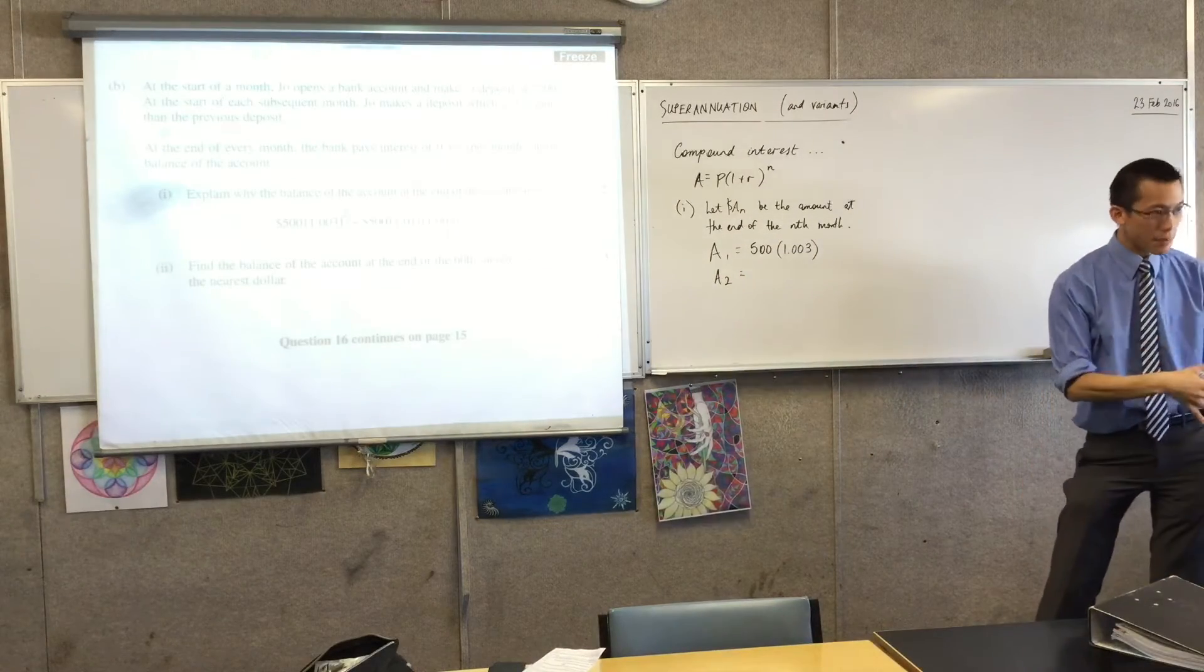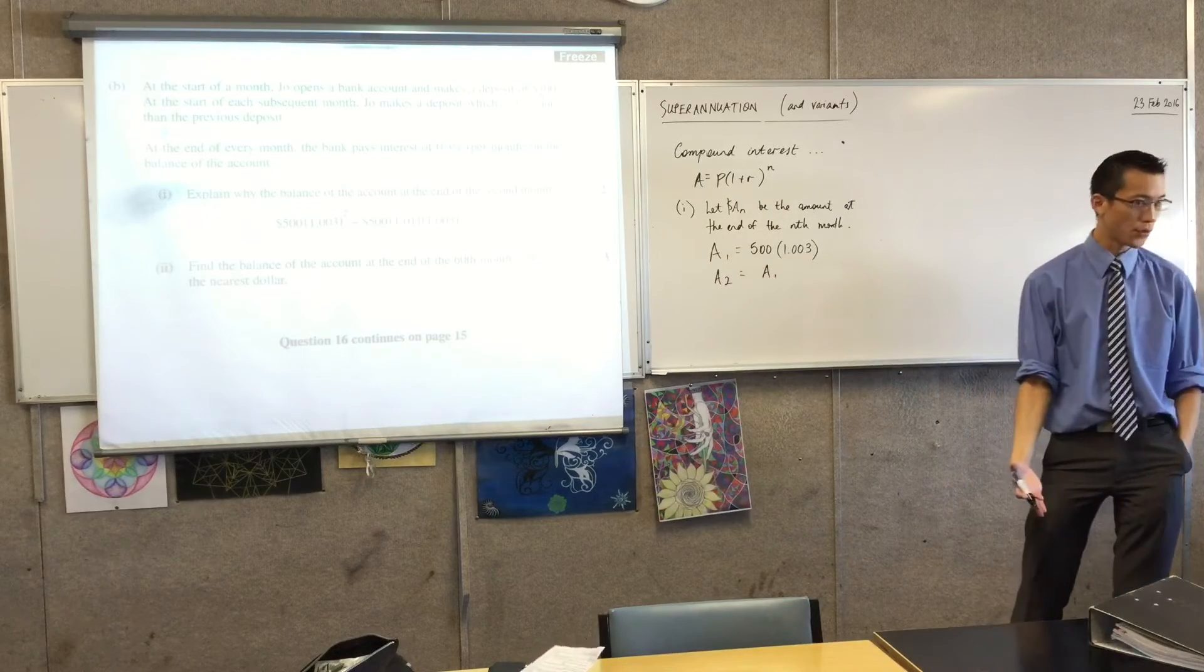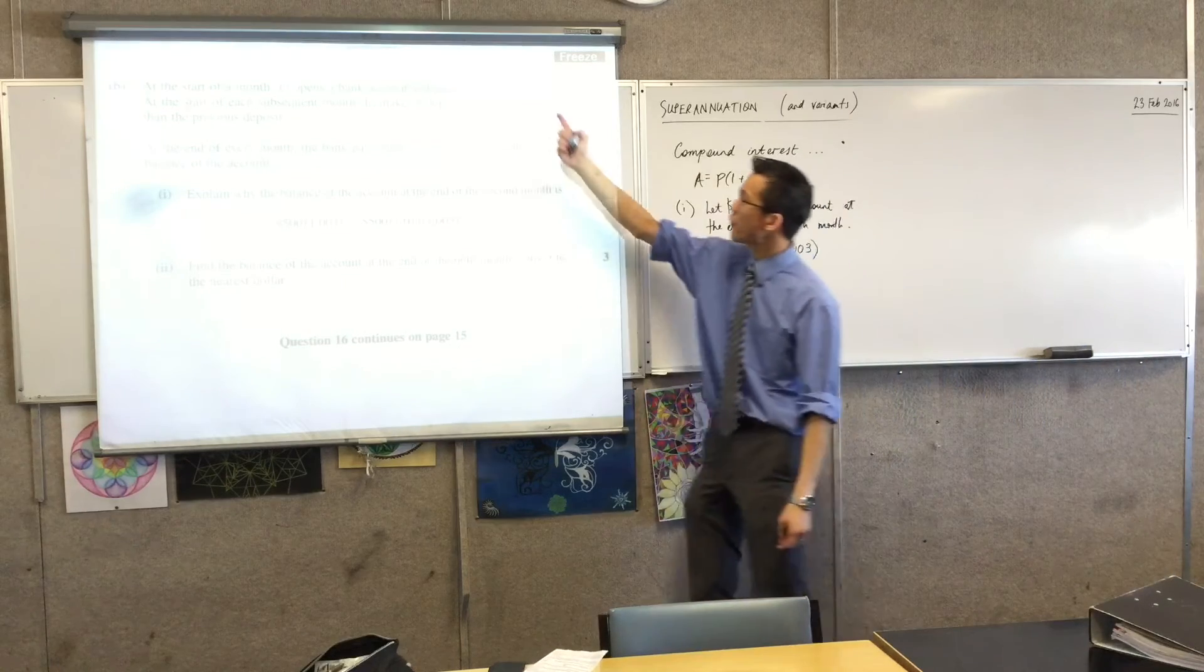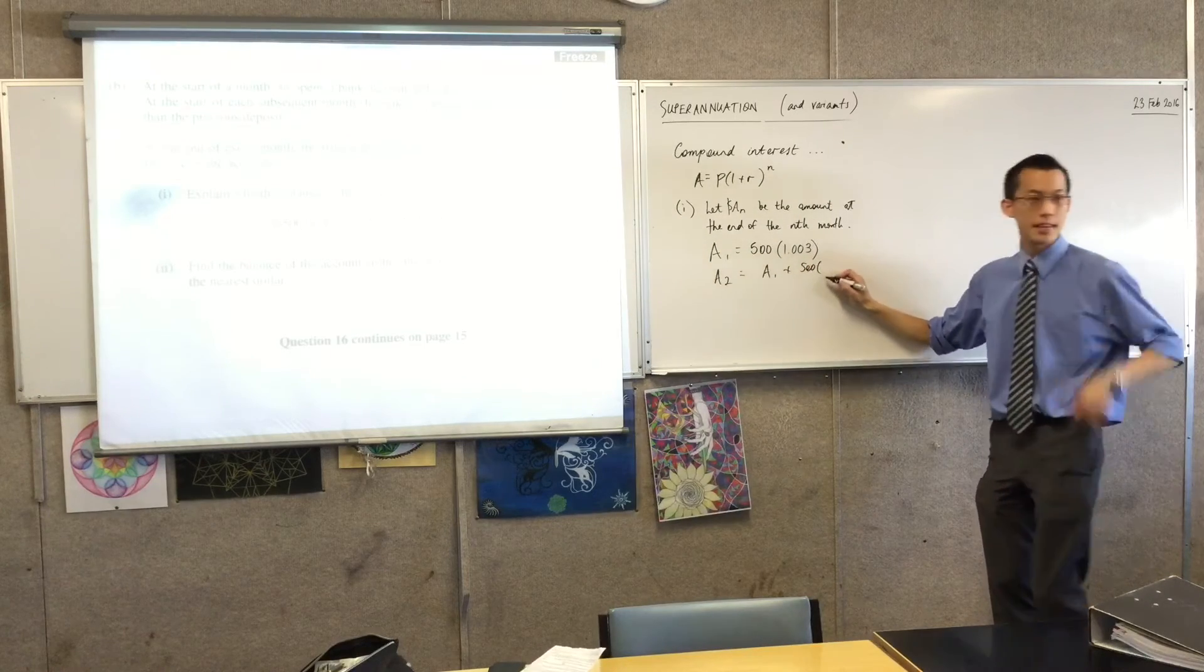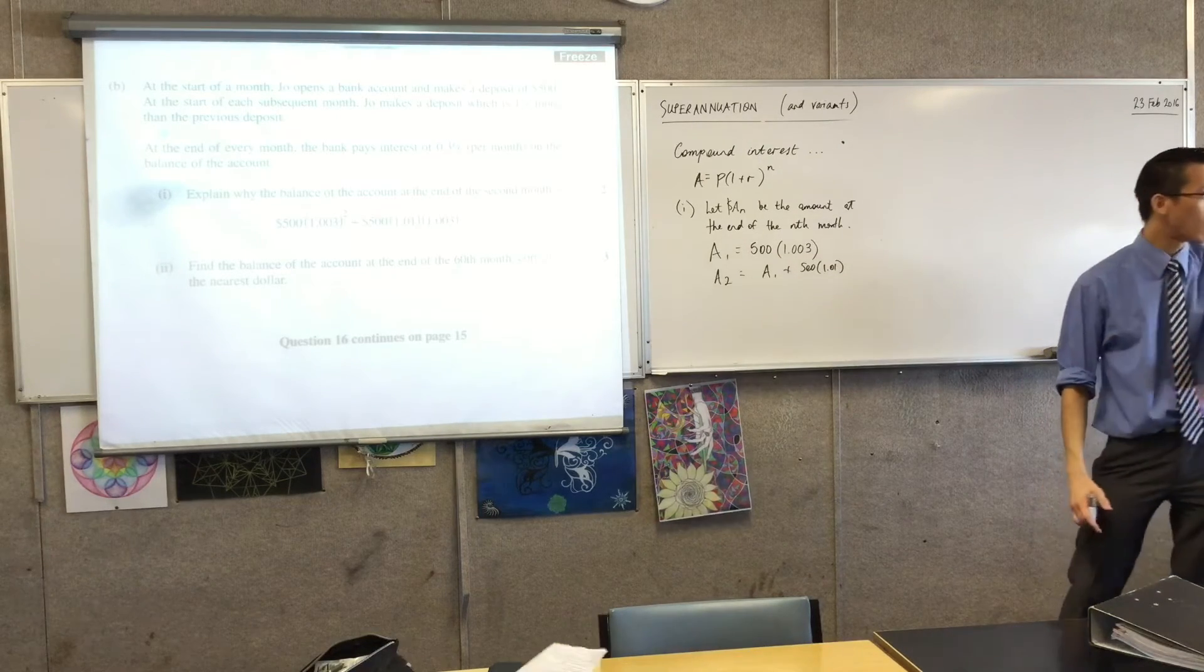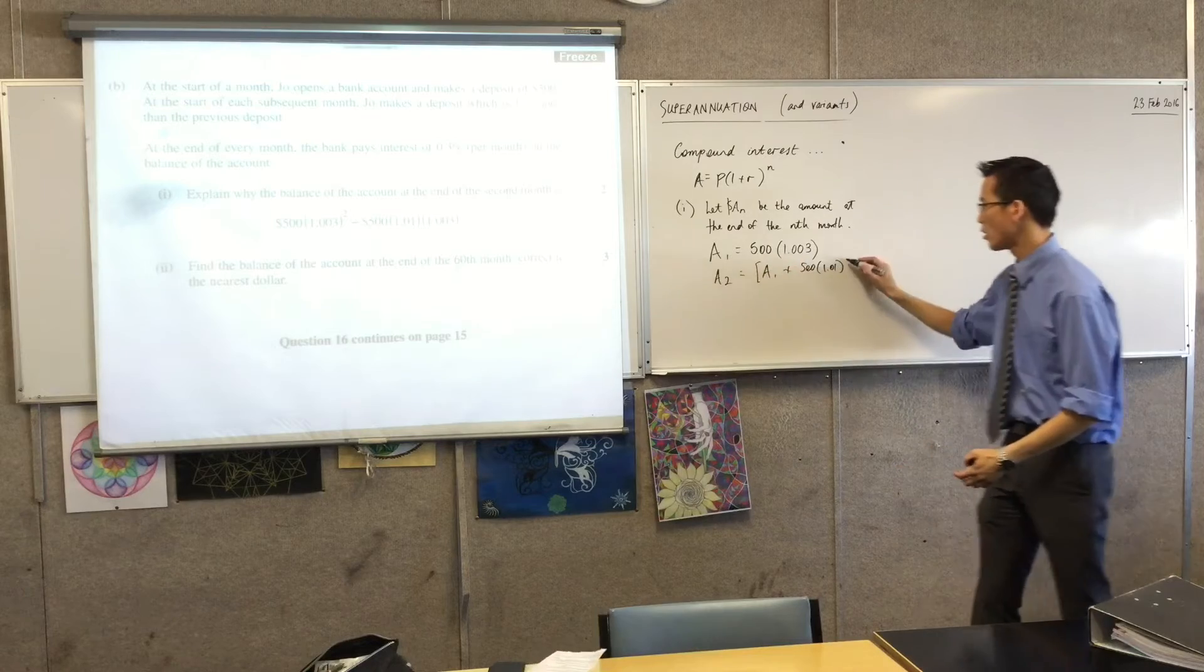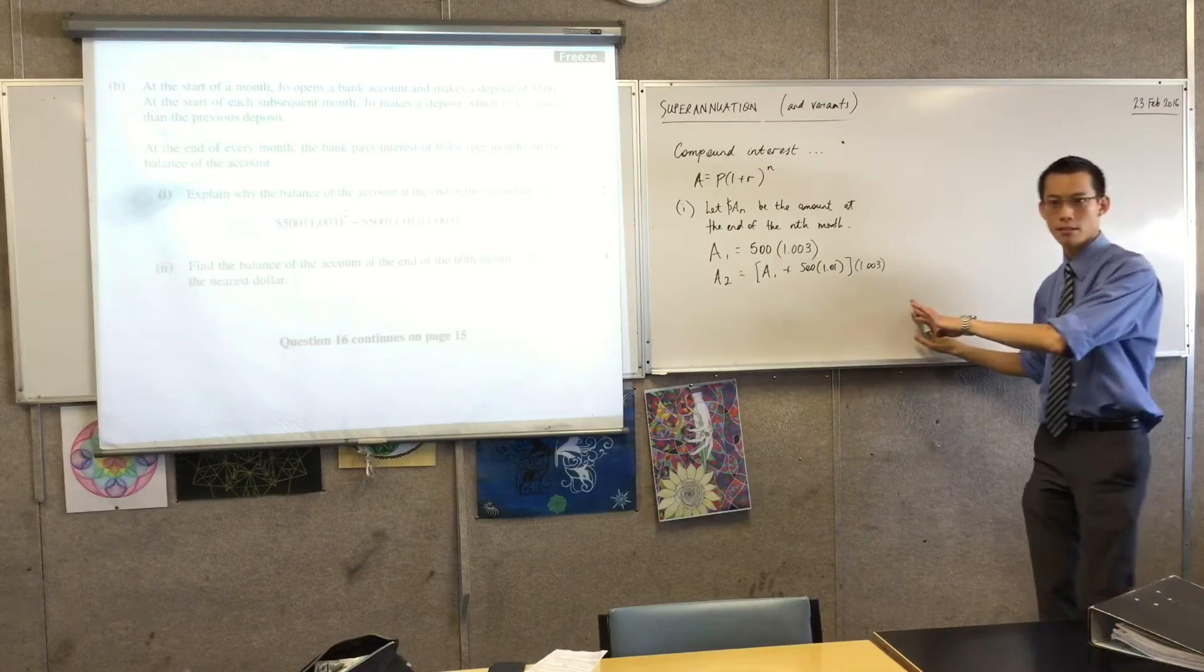Next thing. The next month, again, the same two things happen. So I start with this. That's what I had before. And then I get an extra deposit. Now, what is the size of that deposit? So it's going to be 500, but it's going to be a bit bigger. So I'm going to write that as 500, and then there's the extra 1%. So I'm going to go 1.01. So there's the first thing that happened, the deposit. Now what? Yeah, the entire thing, note that the entire thing gets the interest calculation. So that whole thing gets a 1.003 added on. So I want to clarify that.